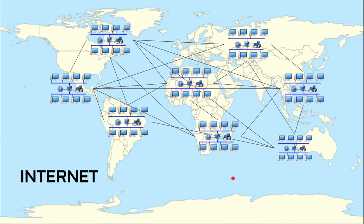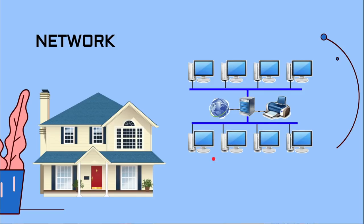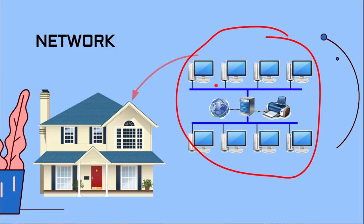Actually, internet and network are two different things. The internet is the relationship of computers connecting with other computers from all around the world, while a network is the connection of one or more computers in one place — for example, inside a house. So now you already know the difference between internet and network.